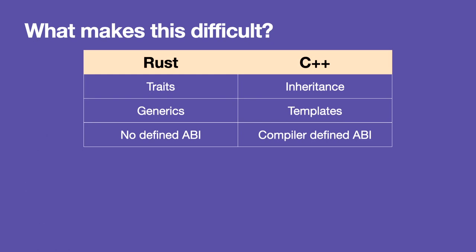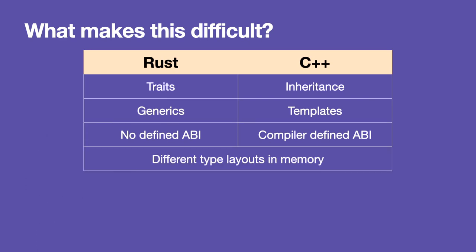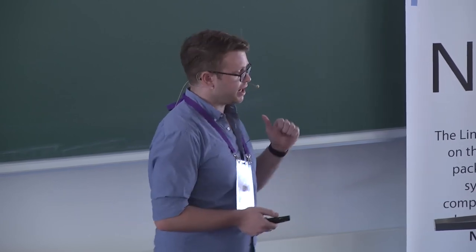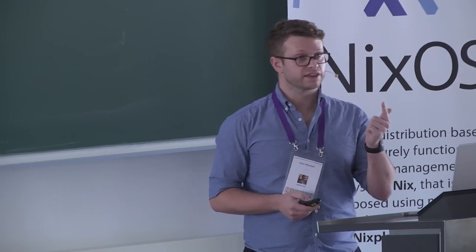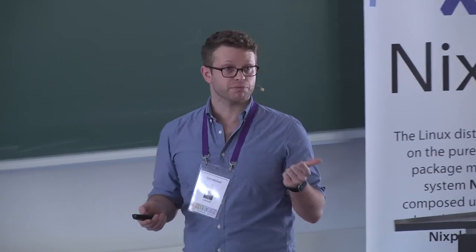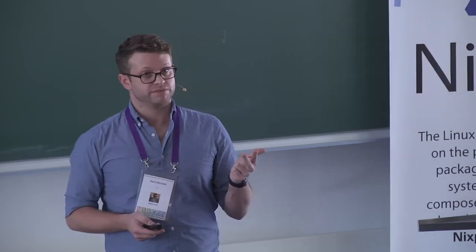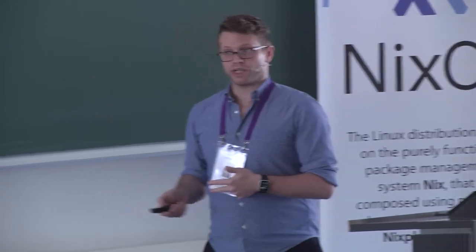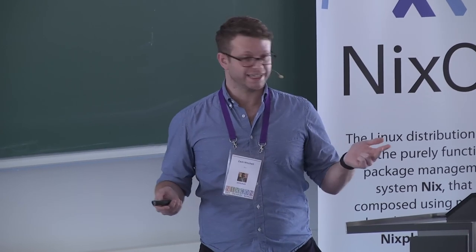They also have different ways of representing function calls and putting stuff in and out of registers. And talking about strings as an example, they have different type layouts in memory. Rust and C++ basically define strings the same way — a pointer to a buffer, a number for the maximum length, and another for the current length — but even if those pieces of data are exactly the same, they may not be in the same order in memory. That's obviously a problem.